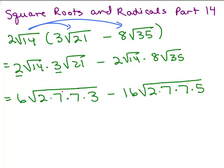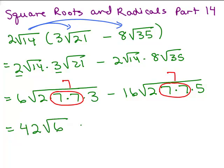So what can I do here? For these two factors of 7, one 7 pops out, and for these two factors of 7, one 7 pops out. So I do have a little bit of arithmetic: I've got 6 times 7 which is 42, square root of 6, minus 16 times 7 which is 112, and I've got 2 times 5 which gives square root of 10.